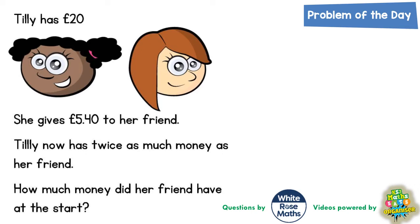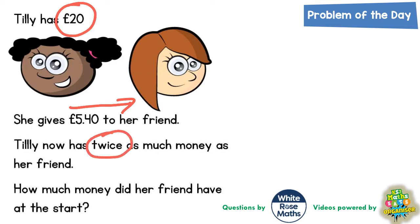Welcome, problem solving fans, to another problem of the day. This is all about Tilly sharing money with her friend. So Tilly has £20, she gives £5.40 to her friend, and Tilly now has twice as much money as her friend. How much money did her friend have at the start?